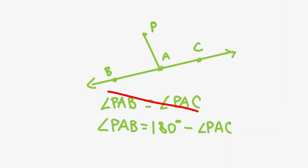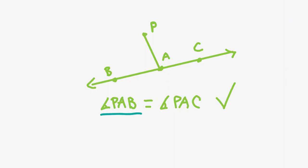Fortunately, if we replace this with directed angles, everything works out. In particular, we can say that points A, B, and C are collinear if and only if directed angle PAB is equal to directed angle PAC.